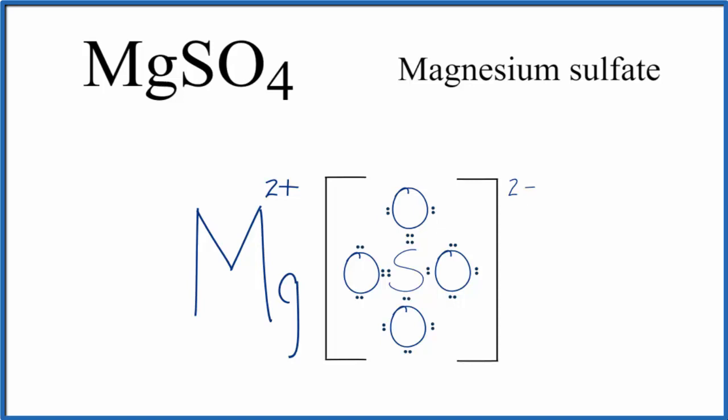You should also understand that this is what is called a formula unit of MgSO4. MgSO4 is a crystal, and it's made up of a repeating pattern of these formula units. This Lewis structure for MgSO4 is just one formula unit of that larger crystal.